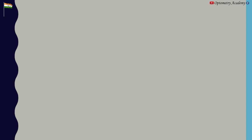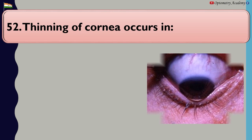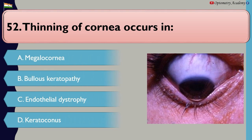Thinning of cornea occurs in: A. Megalocornea, B. Bullous keratopathy, C. Endothelial dystrophy, D. Keratoconus.